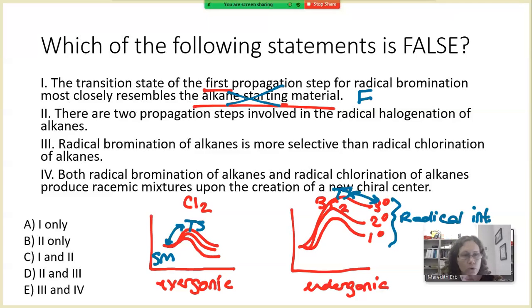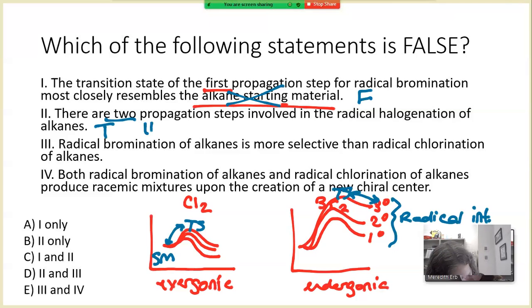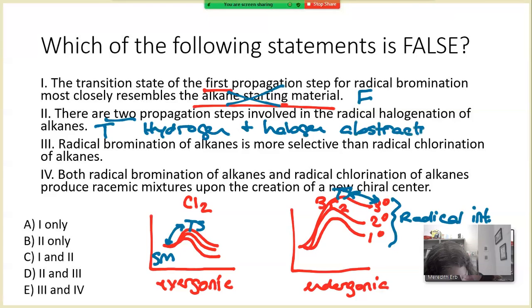The second statement: there are two propagation steps involved in the radical halogenation of alkanes. This is a true statement. We see both hydrogen abstraction and halogen abstraction as the two key steps occurring in the propagation of this reaction.